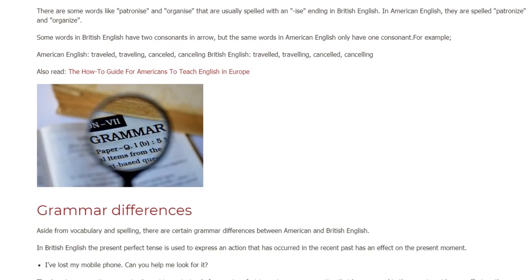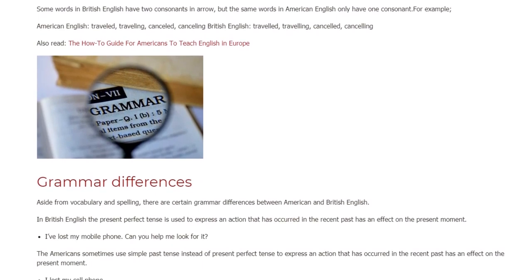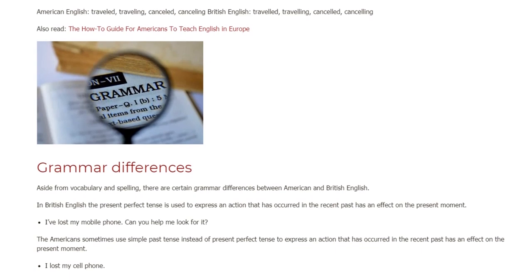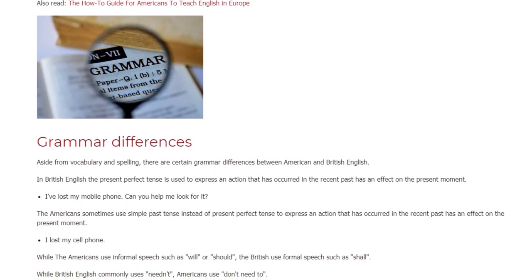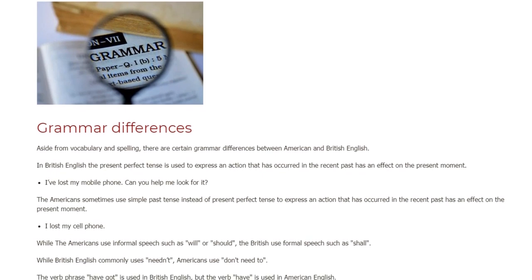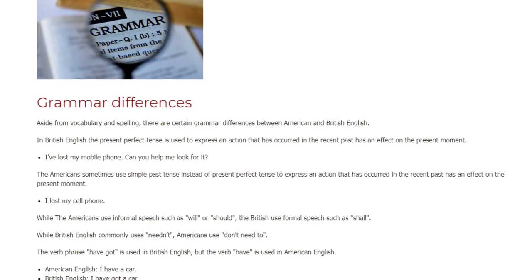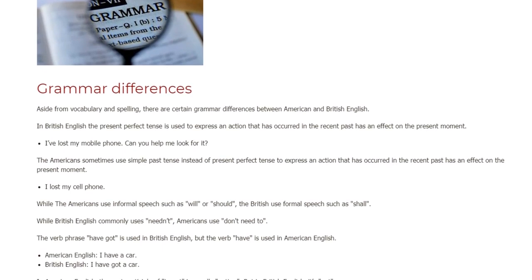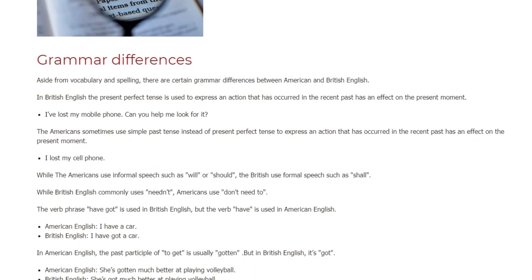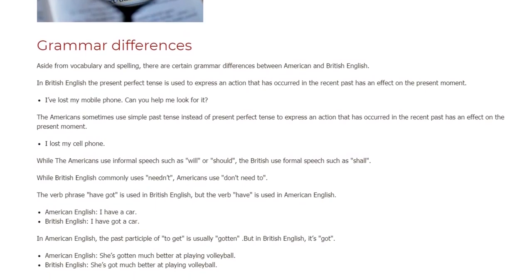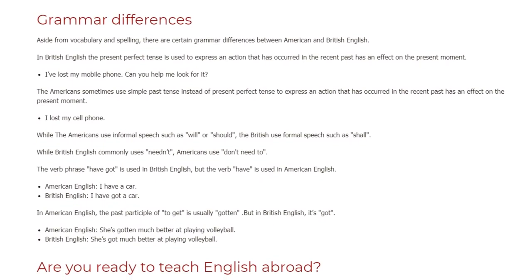Grammar Differences. Aside from vocabulary and spelling, there are certain grammar differences between American and British English. In British English, the present perfect tense is used to express an action that has occurred in the recent past and has an effect on the present moment: 'I've lost my cell phone.' Americans sometimes use simple past tense instead: 'I lost my cell phone.' While Americans use informal speech such as 'will' or 'should,' the British use more formal speech such as 'shall.' While British English commonly uses 'needn't,' Americans use 'don't need to.' The verb phrase 'have got' is used in British English, but 'have' is used in American English.